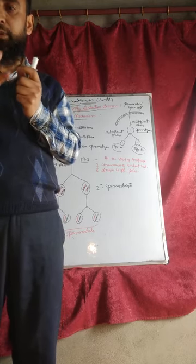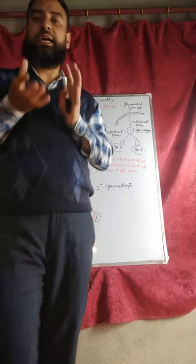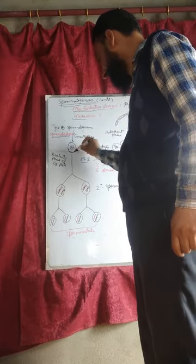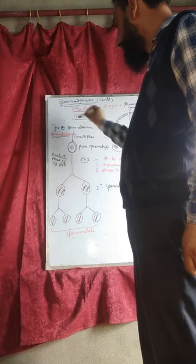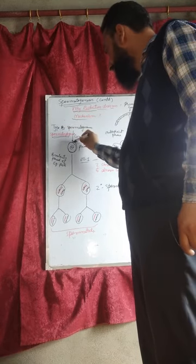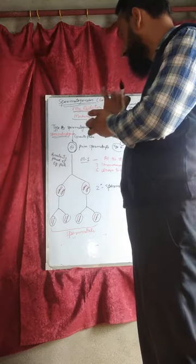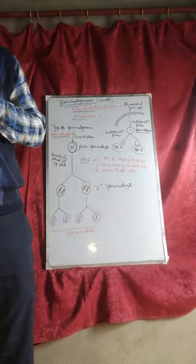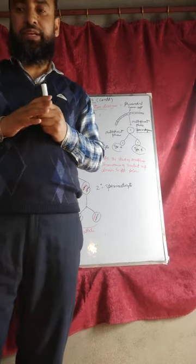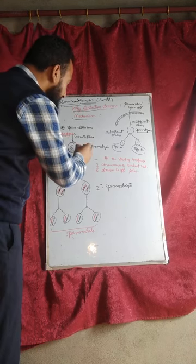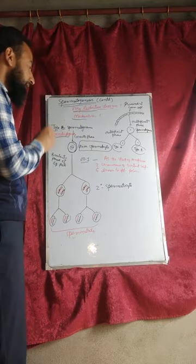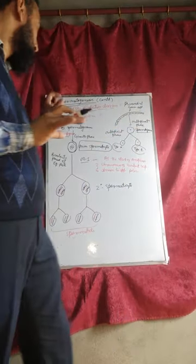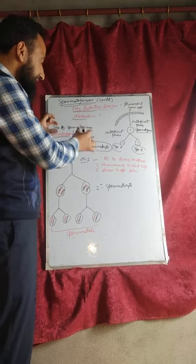In spermatocytogenesis, the diploid spermatogonium increases in size about two times in the growth phase by accumulation of more and more cytoplasm and nutritive materials in the cytoplasm. It forms a diploid primary spermatocyte. Up to this point, there is no change in the chromosome number, so the number of chromosomes in the primary spermatocyte is still diploid.